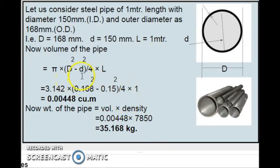And these diameters, we have converted this into meter. That is 168 mm divided by 1000, that is equal to 0.168 meter. The volume will be equal to 0.00448 cubic meter. This is the volume of 1 meter length pipe.